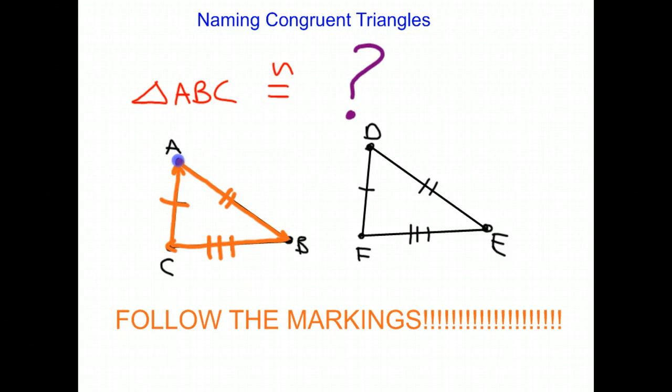So we're going to keep that same progression for the next triangle. We're going to start at the side with two markings, which is DE. We're going to go from two markings to three markings, back up to one marking. So triangle ABC is going to be congruent to triangle DEF.